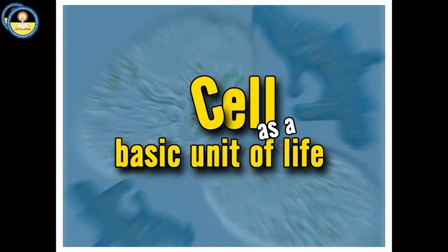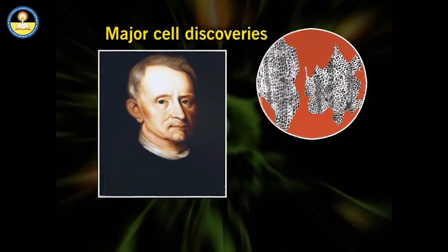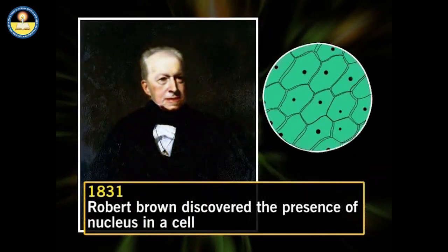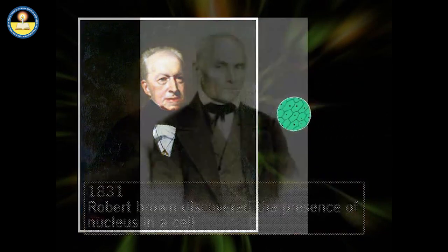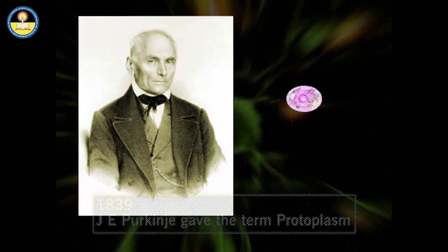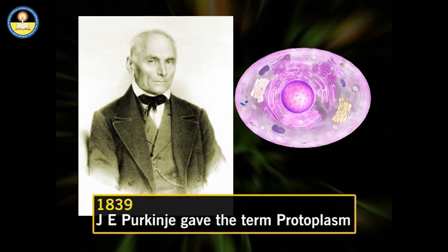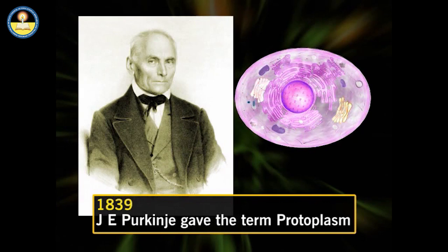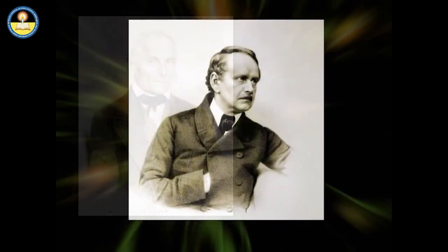Cells are the basic unit of all living things. Robert Hooke, in 1665, was the first to study and record cells by using a microscope. Robert Brown, in 1831, discovered the presence of a nucleus in a cell. J.E. Purkinje, in 1839, gave the term 'protoplasm' to the living contents of a cell surrounded by a plasma membrane. The entire content of a cell, comprising the nucleus and the cytoplasm, is known as protoplasm.